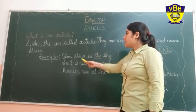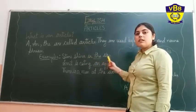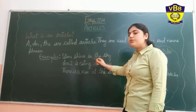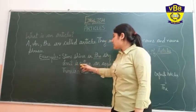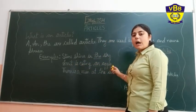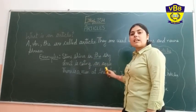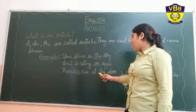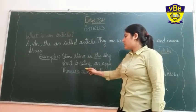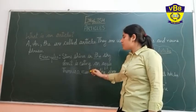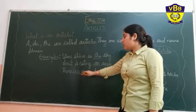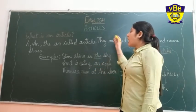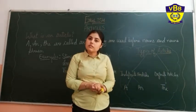Look, there are a few examples. 'A star shines in the sky' — sky is a noun, so before the noun we use article 'the'. 'A man is eating an apple' — apple is a noun, so before it we use 'an'. 'There is a man at the door' — man is a noun, so before the noun we use 'a'. Always remember, articles always come before a noun.